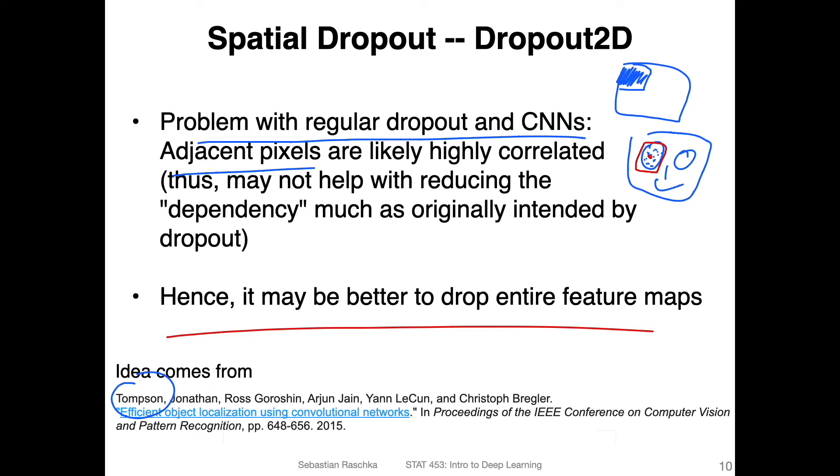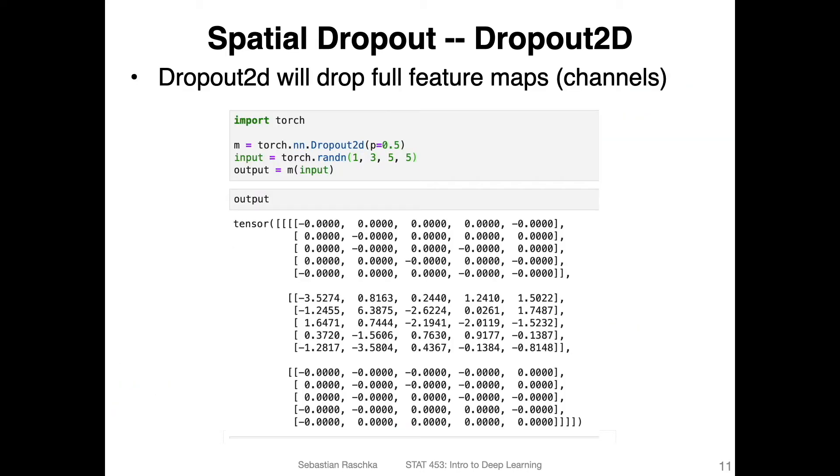So essentially Dropout2D is dropout applied to the channels rather than the pixels. You would drop entire channels instead of pixels. And that's all there is to it. So how do we do that in PyTorch? It's pretty straightforward. Instead of saying dropout 1D, you are now saying dropout 2D. And that's essentially it.